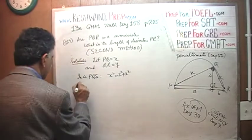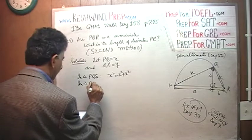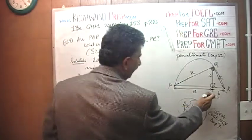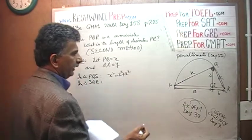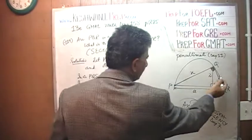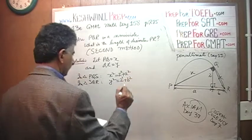Similarly, in triangle SQR, in that triangle the hypotenuse is Y. Y squared would equal 2 squared plus B squared. So far so good.